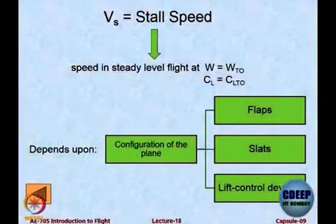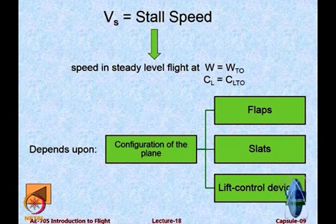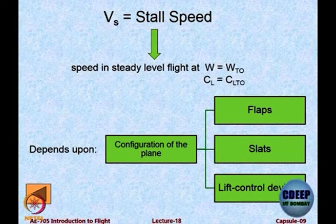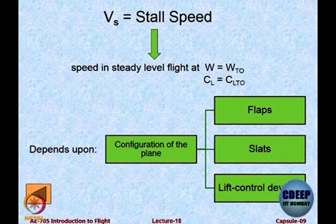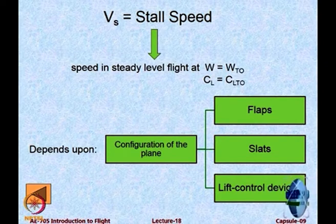The first key speed is the stalling speed V_S — the speed in steady level flight. It depends on aircraft configuration: whether flaps are up or down, how much they are deflected, whether slats are operating, and other lift control devices available. All of them affect the value of the stalling speed.